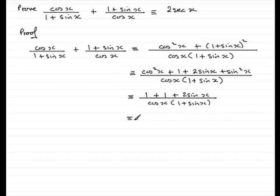And then I can group these two together so that's 2. And then I could factorize this. I've got 2 plus 2 sin x so I could pull a 2 out as a common factor. So I've got 1 plus sin x.